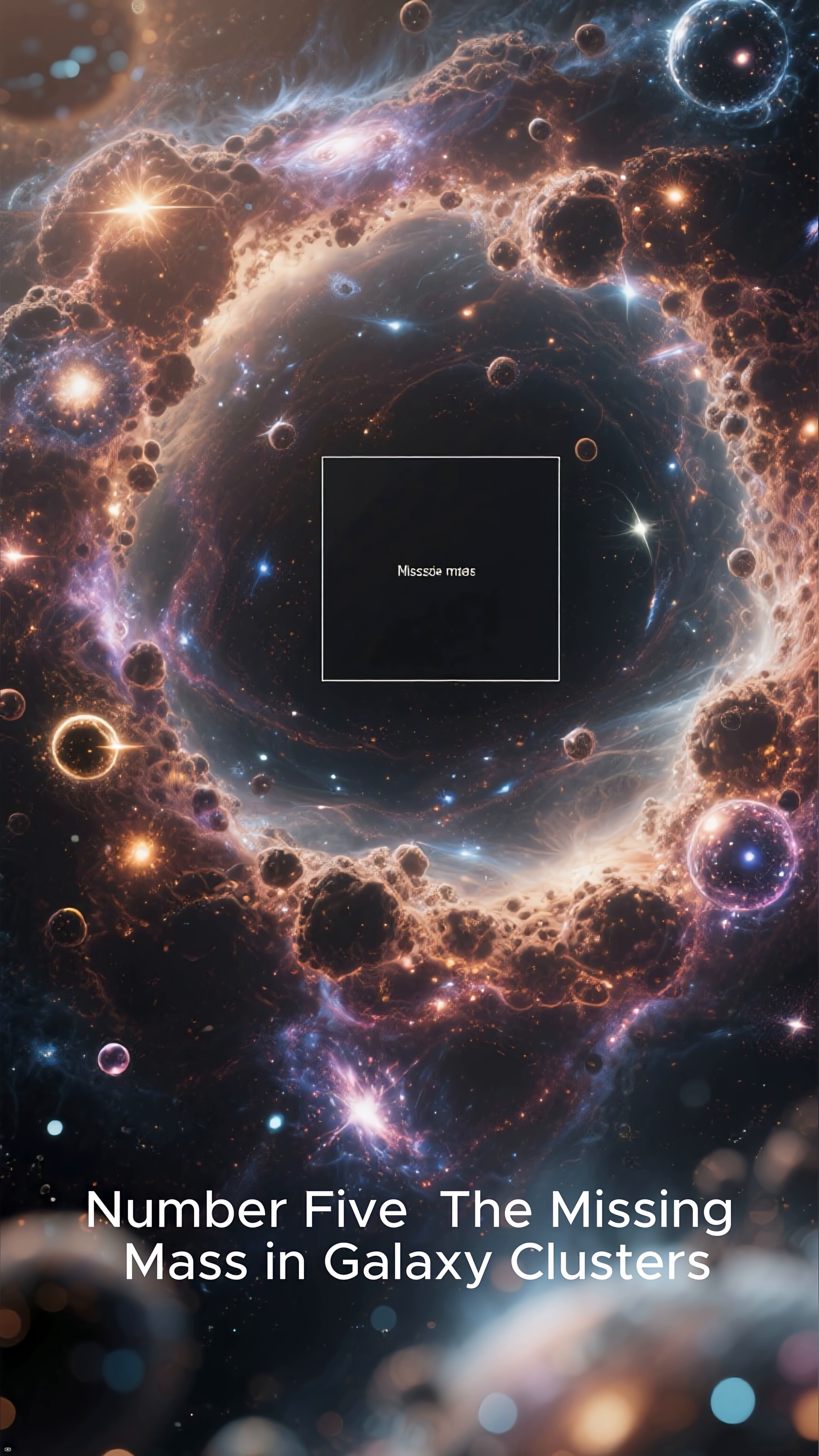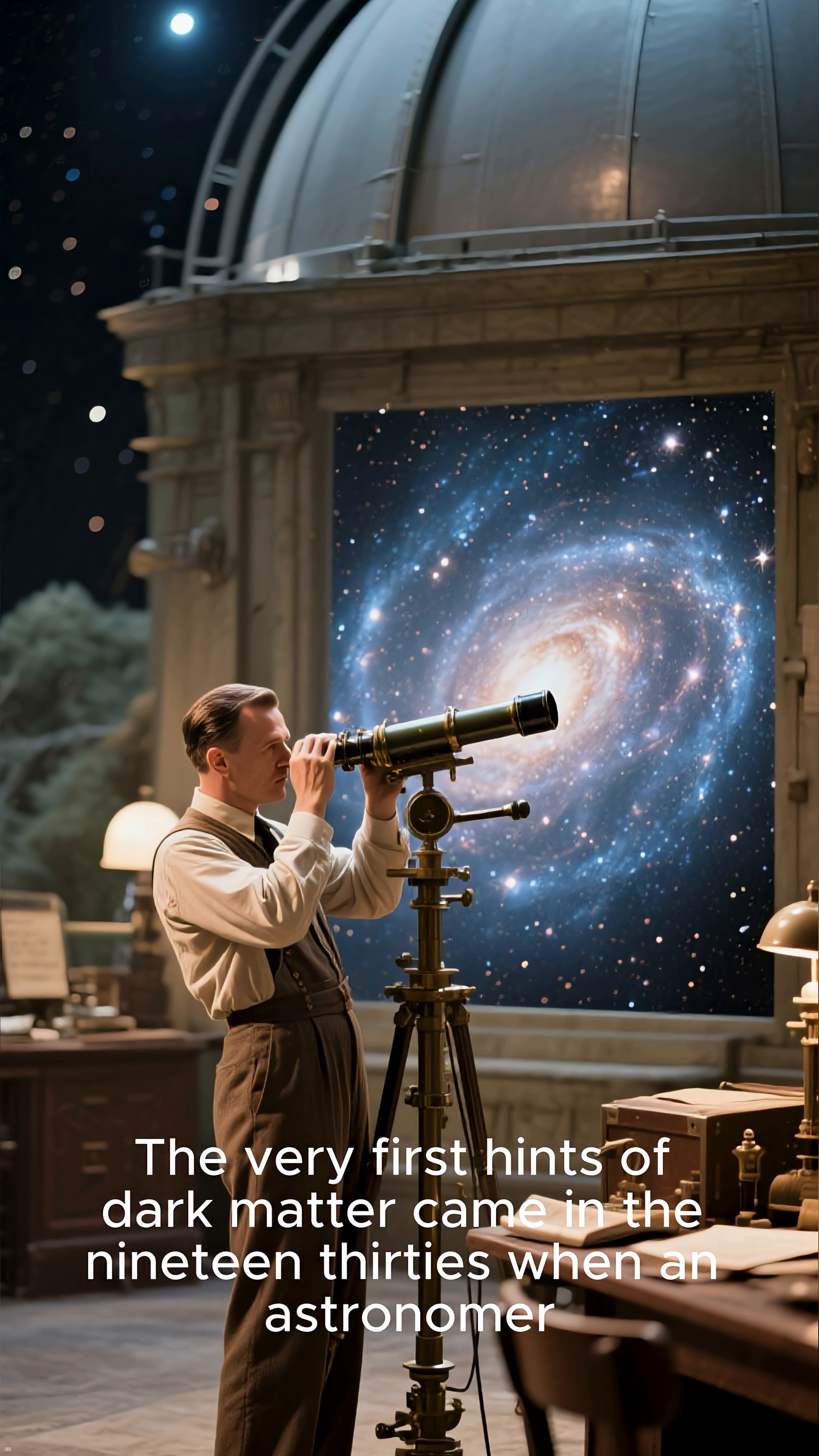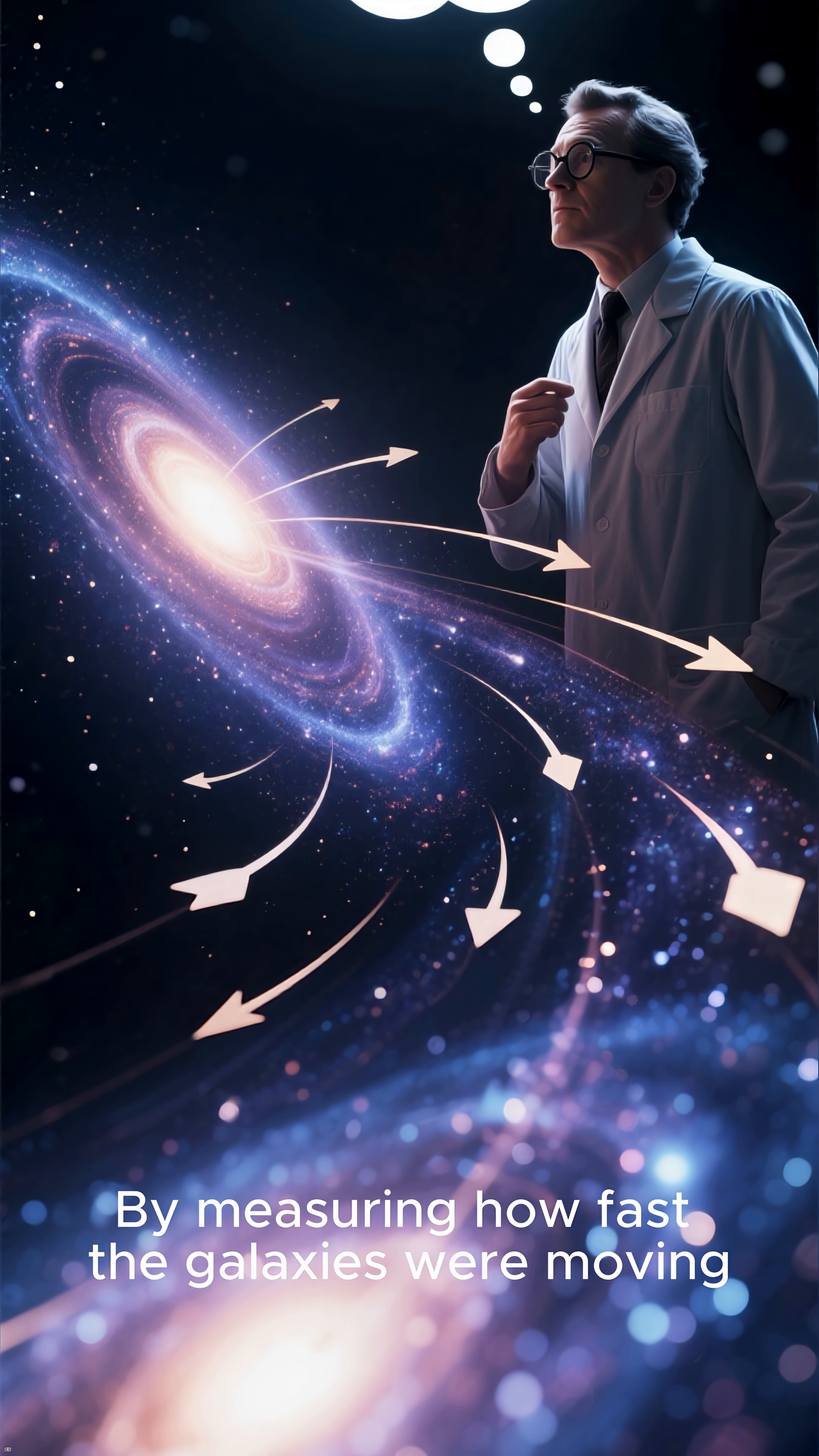Number 5: The Missing Mass in Galaxy Clusters. The very first hints of dark matter came in the 1930s when an astronomer studied a cluster of galaxies. By measuring how fast the galaxies were moving,